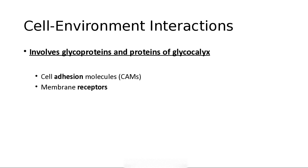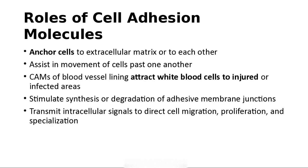It involves cell adhesion molecules and membrane receptors. Adhesion molecules anchor cells to the extracellular matrix or to other cells, help cells move past each other, and attract white blood cells into injured areas to fight germs. They stimulate synthesis or degradation of adhesive membrane junctions, transmit signals, and cause cell migration, proliferation, and specialization.